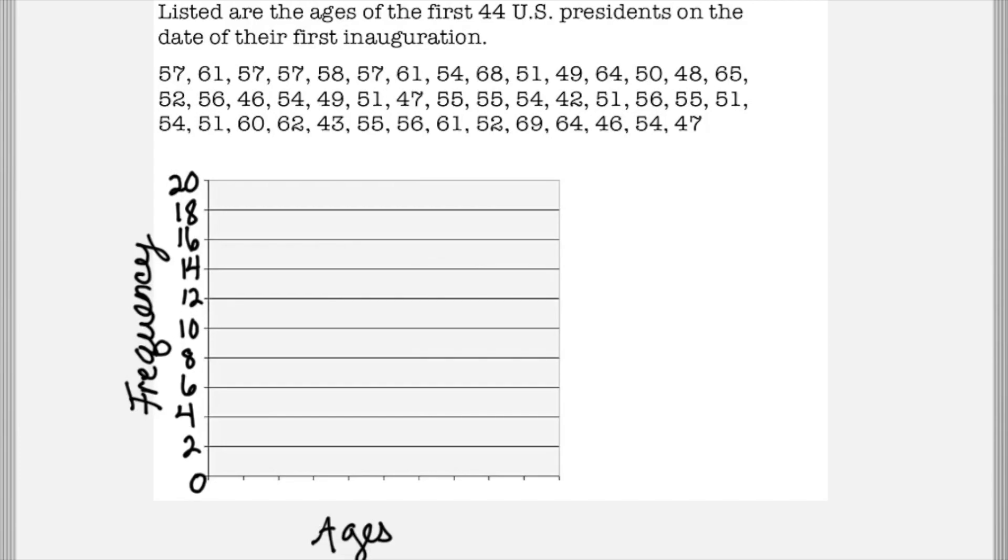If I go by groups of five, I'm going to circle the lowest numbers first, which is 43 and 42, which is in between 41 and 45. And then you would mark it up to two on the frequency, because there's only two presidents during that range of ages. Then we're going to go to the next group, 46 to 50.